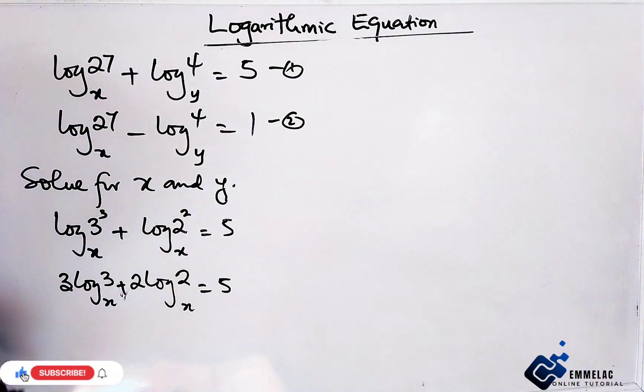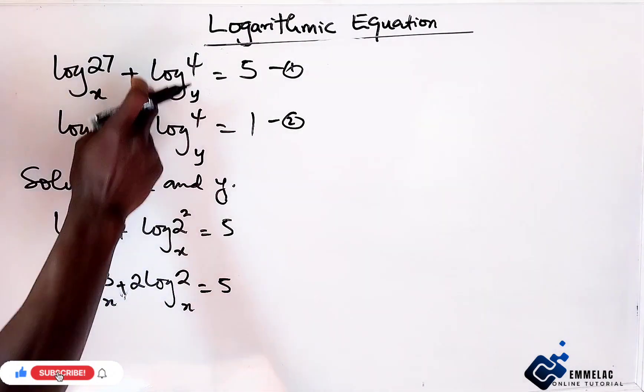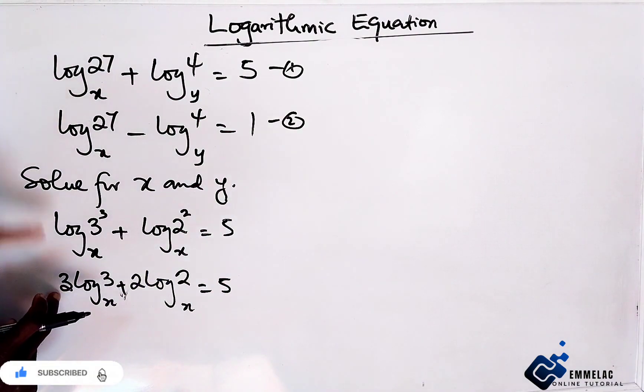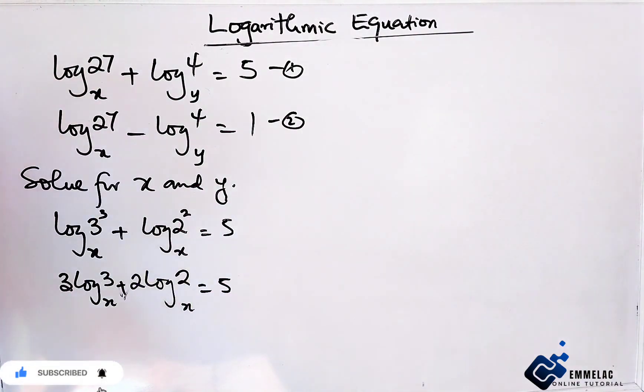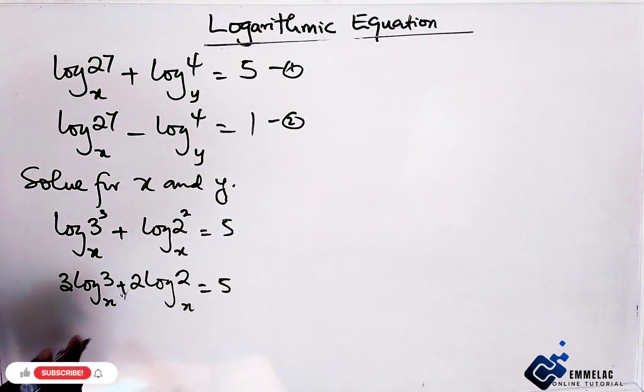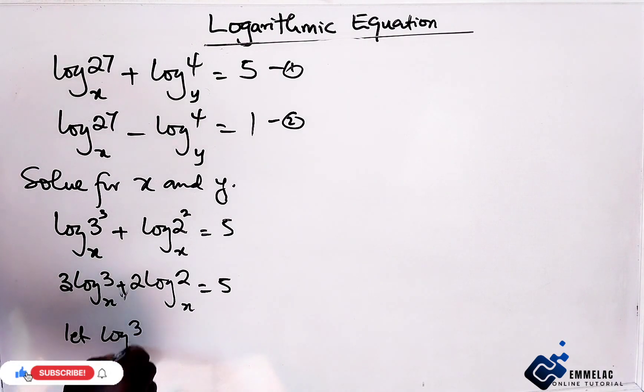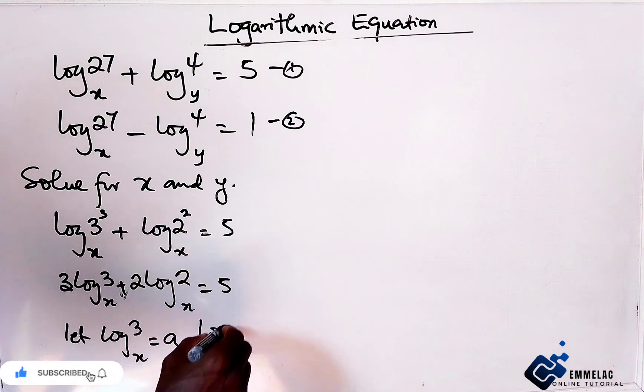From this, you can see that these terms are the same thing, except this one is negative and here we have 1. From here, let log base x of 3 equals a, and log base x of 2 equals b.